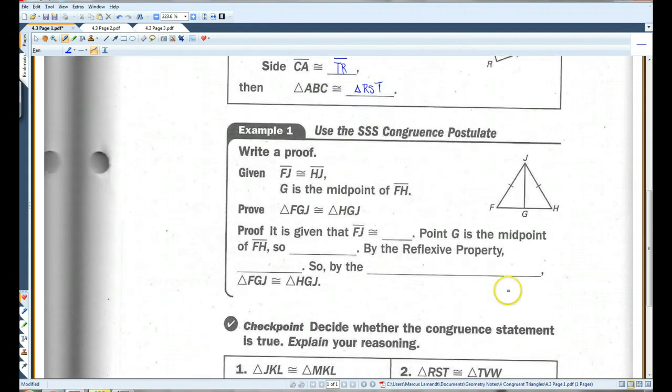Alright, so for example, given that FJ is congruent to JH and G is the midpoint of FH. Now remember, midpoint means that G cuts it in half. That means this is going to be congruent to this.